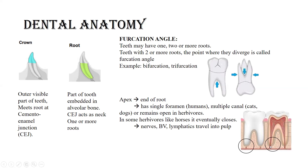In some animals the apex remains open throughout their life, and in others it closes. Based on this fact, there is a species difference that allows teeth to grow throughout life in some animals but not in others. In humans, teeth do not keep growing once they have achieved their maximum length — there will be no more growth. But in other animals like horses or rodents like rabbits, their teeth keep growing throughout life. We will see more detail on this in the upcoming slides.